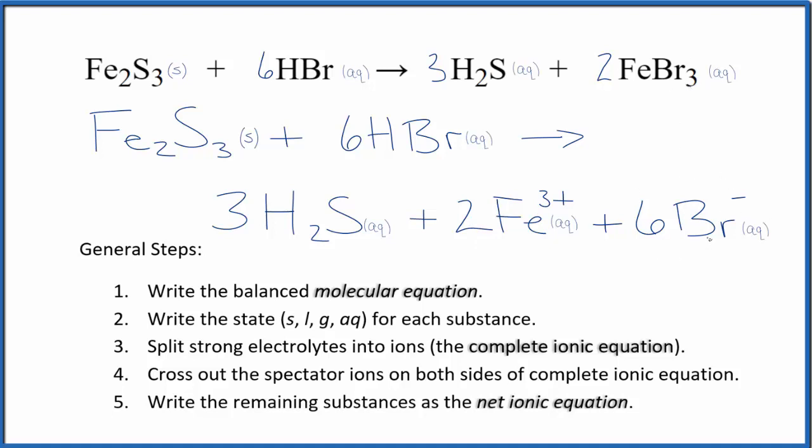Now we can cross spectator ions out, except there aren't any. All the substances in the reactants and the products, they're different. So this is also the net ionic equation for Fe2S3 plus six HBr.